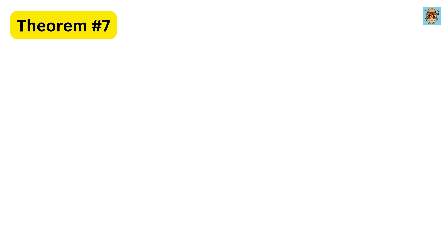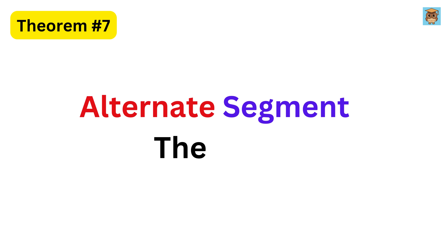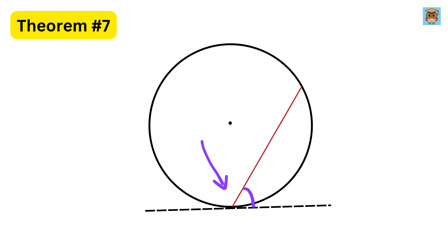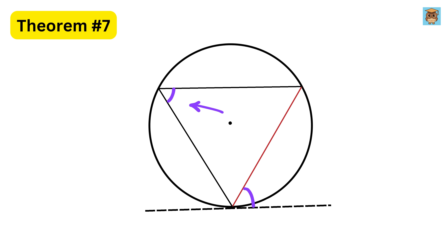Theorem seven: alternate segment theorem. This theorem states that the angle between a tangent and a chord drawn from the point of contact is always equal to the angle that the same chord subtends in the opposite segment of the circle. The same is true for this angle — it will be equal to this angle because this chord makes this angle at the circumference of the circle.